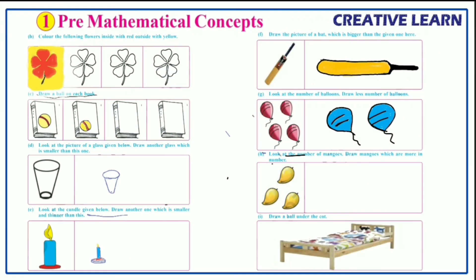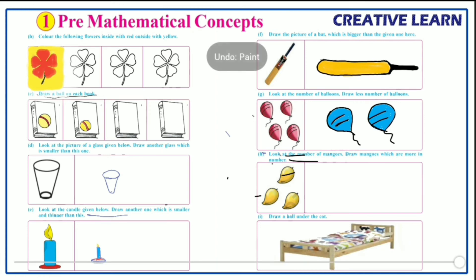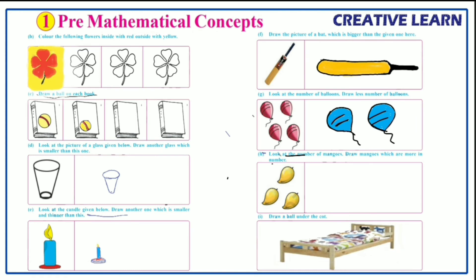Next: look at the number of mangoes and draw mangoes which are more in number. Here three mangoes are given — we have to draw more than three. Let's draw more mangoes than the given ones.